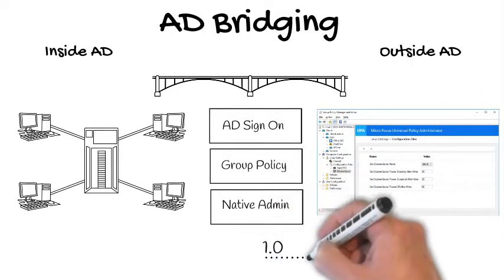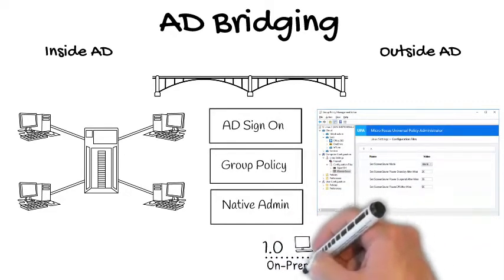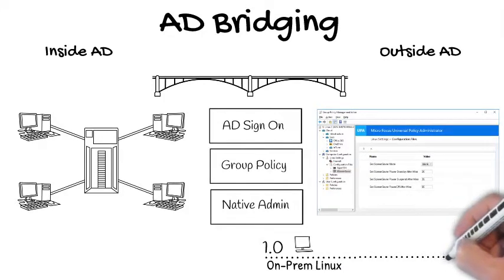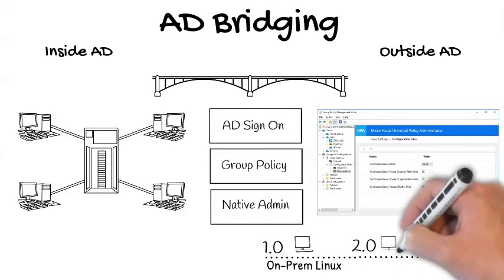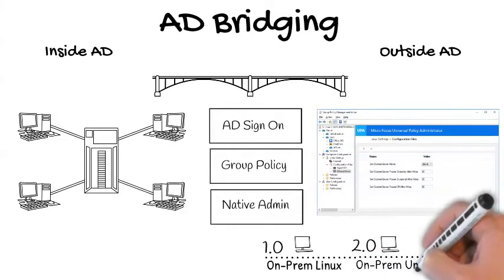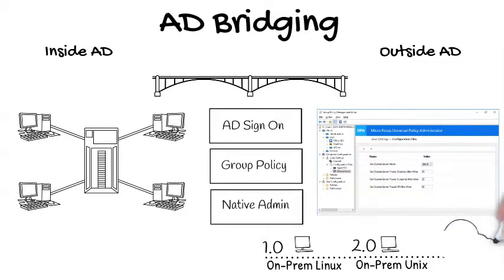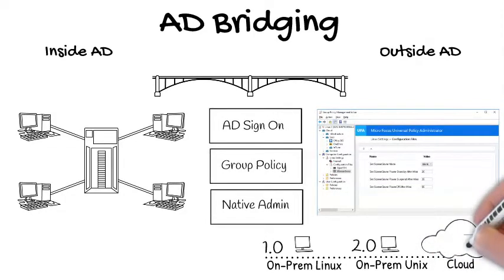Our 1.0 version allows you to configure and manage Linux endpoints as if they were directly on the Active Directory domain. Afterwards, our 2.0 version will give you the ability to extend that management to Unix devices, and then onto VMs and services that are running in the cloud.